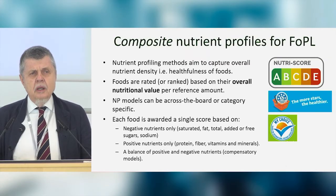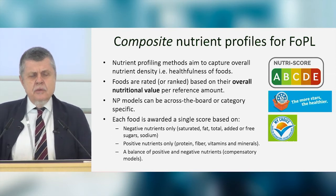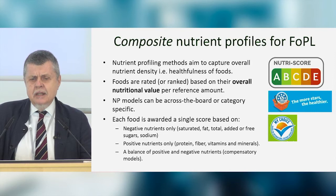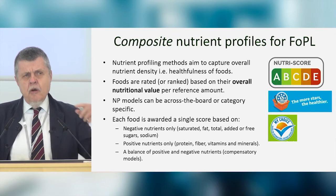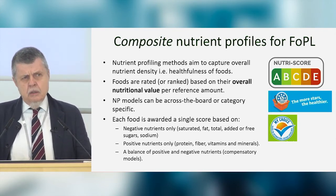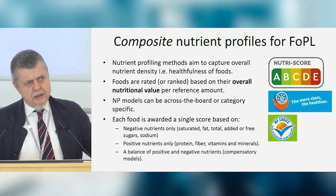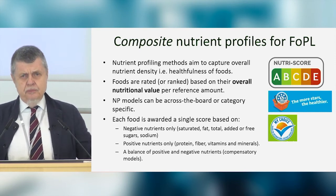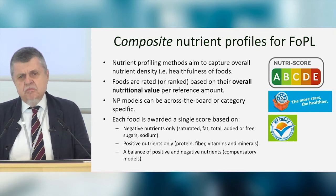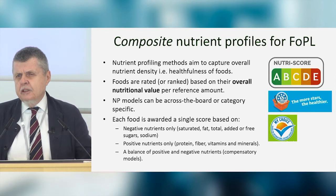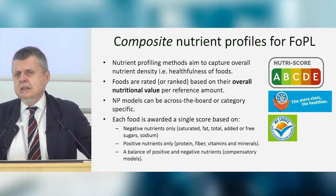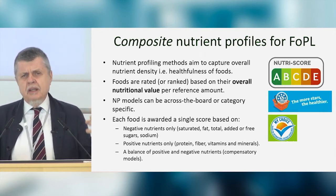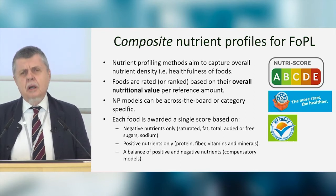The nutrient profiling I want to talk about is the composite nutrient profile. These composite methods aim to capture the overall nutrient density — the healthfulness of foods — where foods are rated or ranked based on their overall nutritional value. Models can be across the board, with the same criteria applied to every food group, or they can be category-specific. Industry actually prefers category-specific models — finding the best pizza in a category, the best cereal in a category.